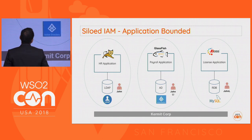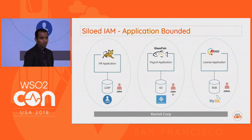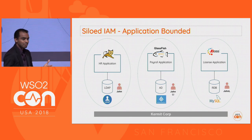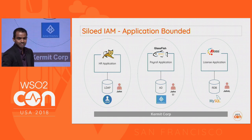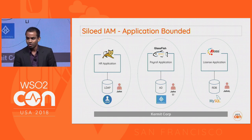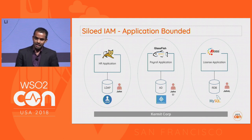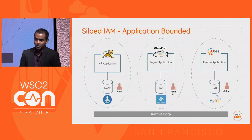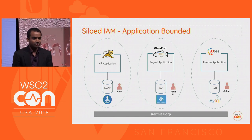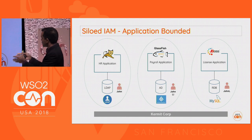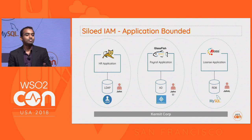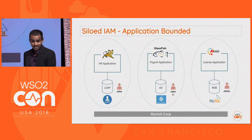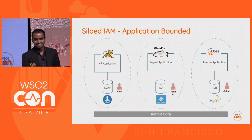John Lee is an employee of Kermit Corporation. All these applications are apps of Kermit, but still this employee needs to go and create a user profile in each of the apps and provide credentials when he wants to authenticate. He might have to maintain different sets of credentials because each application maintains users in different user stores. That's how it used to be.